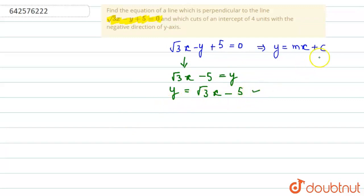So, by comparing this and this, we can say that the value of m here is √3. So, m₁ is equal to √3.